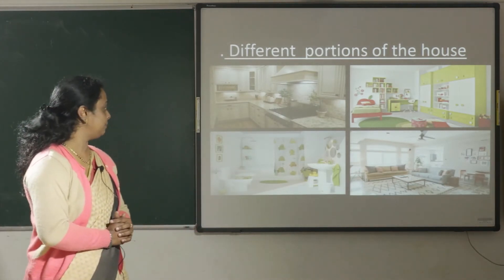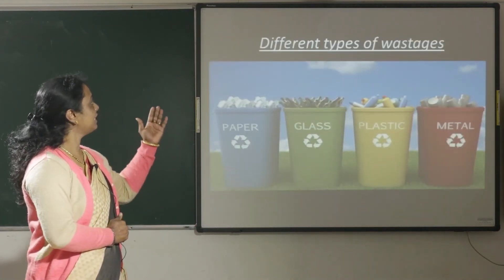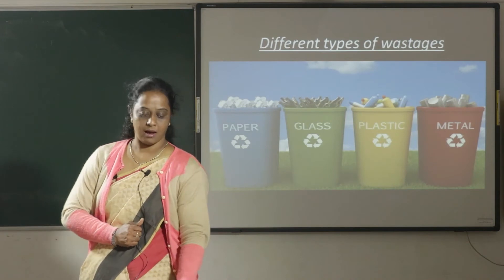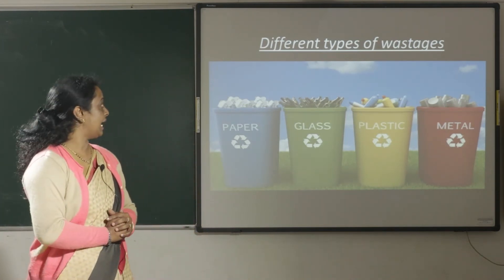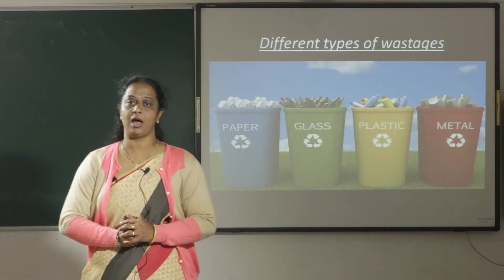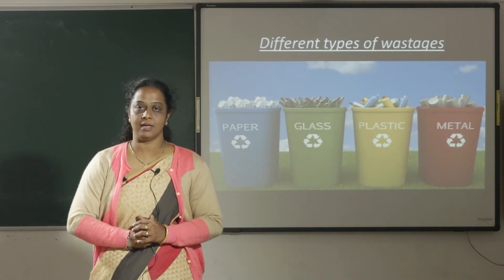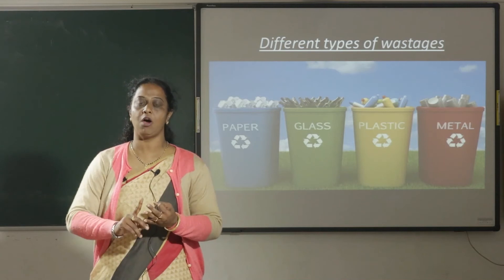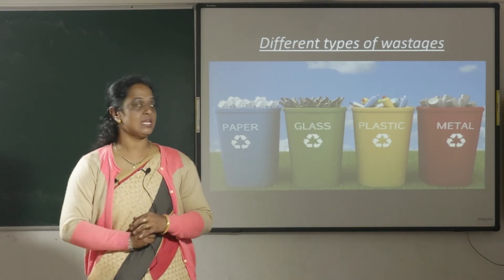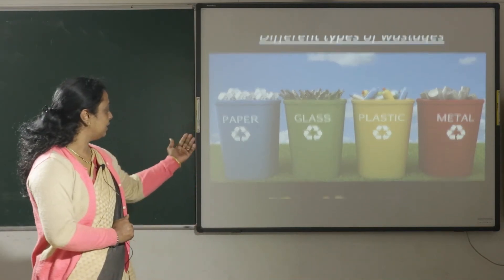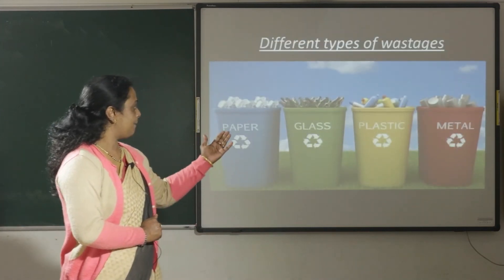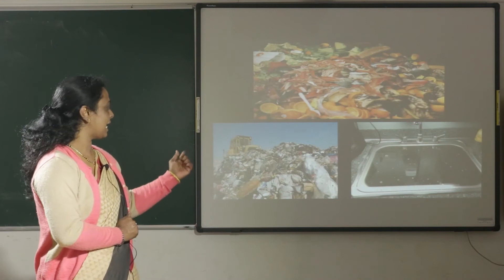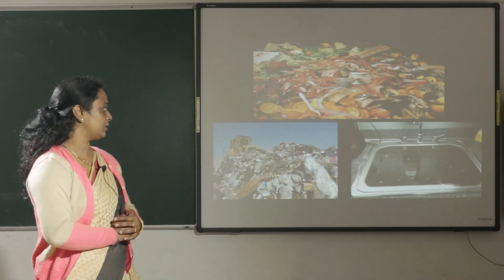Now let's learn about different types of waste. Waste is any unwanted or unuseful material. Waste can be in any form — solid, liquid, or gas. There are various types of waste like paper, glass, plastics, metal, unwanted food, torn clothes, and waste water from the kitchen.